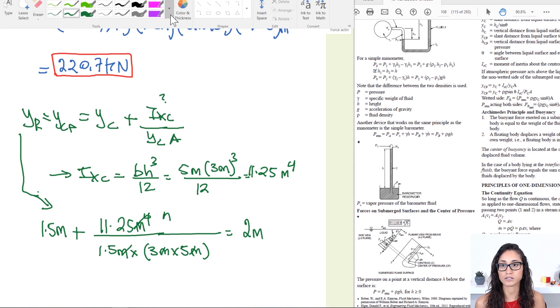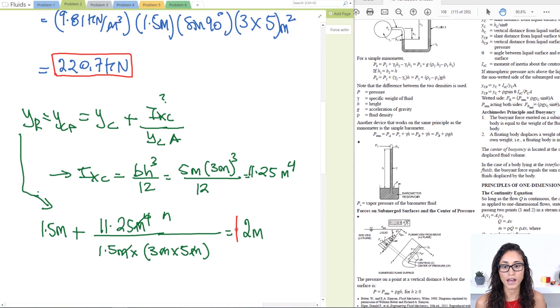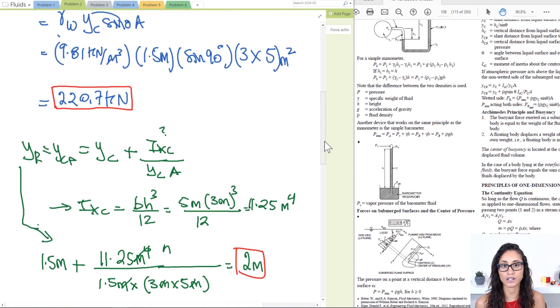So that's going to be your answer, and just like I mentioned earlier, we already kind of guessed it was going to be b because we know that the resultant force cannot act at the centroid.